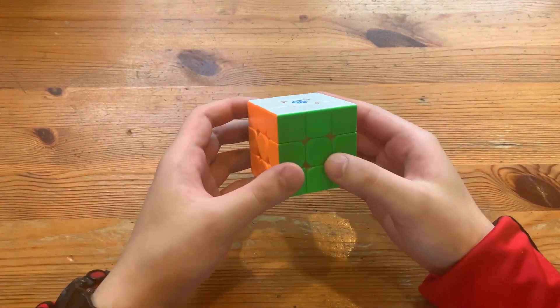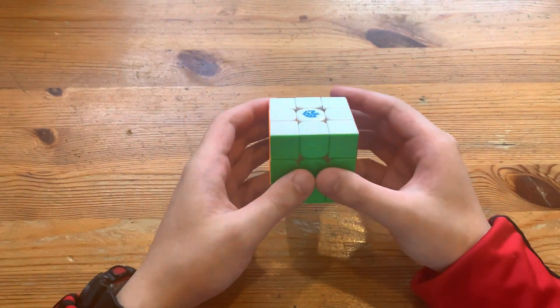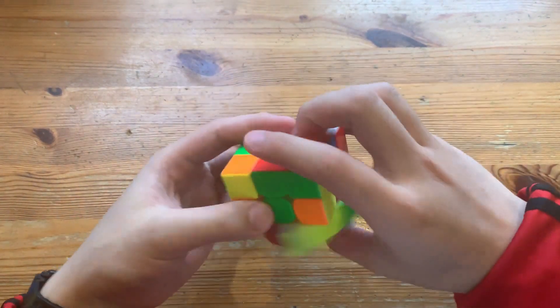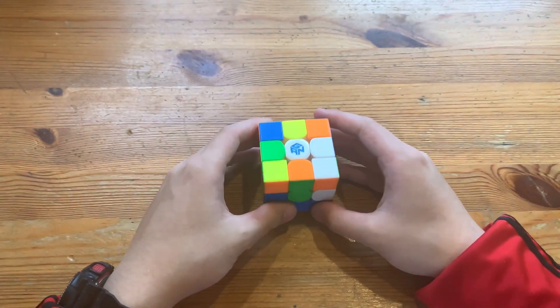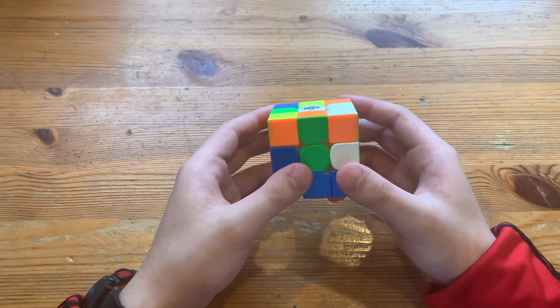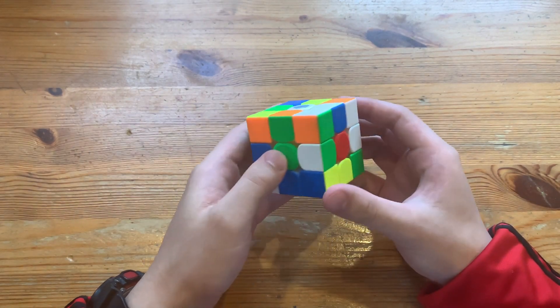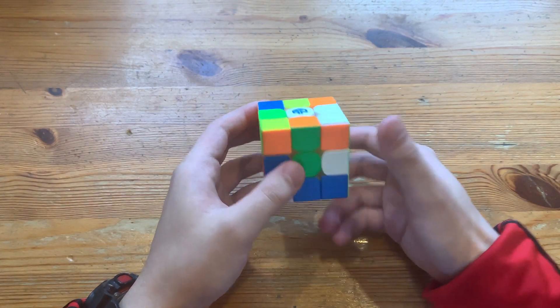So guys, this will be a breakdown of Yibo Wang's 6.47 3x3 OH single, and it's done at 7.57 TPS, which is amazing for OH. But anyways, scramble will be in the description. What he did was white cross.